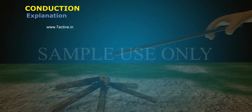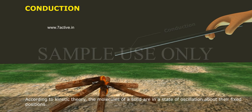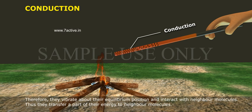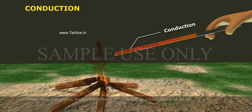Explanation: According to kinetic theory, the molecules of a solid are in a state of oscillation about their fixed positions. When one end of a metal rod is heated, the molecules at heated end absorb energy. Therefore, they vibrate about their equilibrium position and interact with neighbour molecules. Thus, they transfer a part of their energy to neighbour molecules.